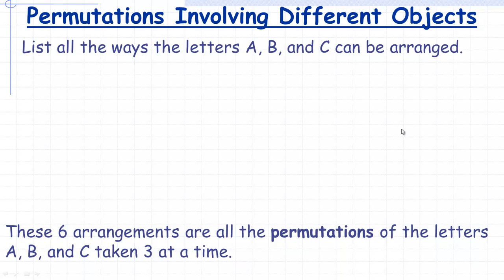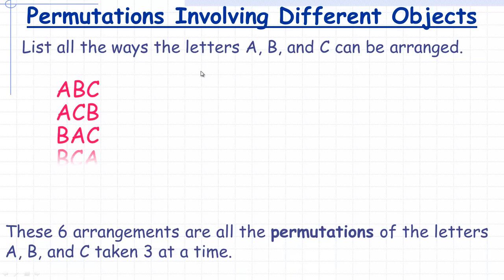In this tutorial, we're going to take a look at permutations involving all different objects. On the first page, we're going to look at a little example. It says: list all the ways the letters A, B, and C can be arranged. So A, B, and C are three different objects. These are all the ways we could write A, B, and C in different orders — for example, A, B, C.